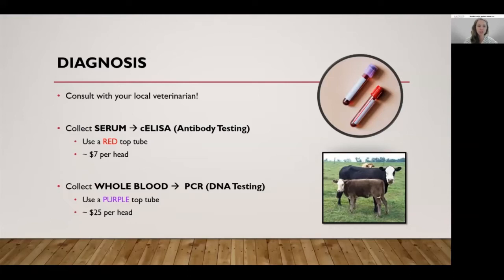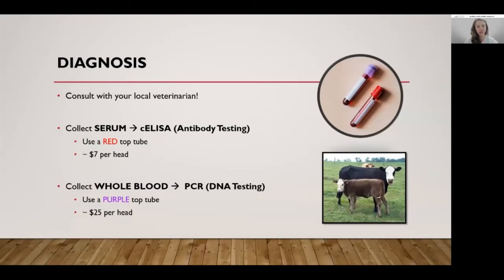The ELISA is the most cost-efficient test at roughly $7 per head. You can also collect a whole blood sample in a purple top tube, which contains anticoagulant to keep blood in suspension. Those samples are submitted for DNA testing via PCR. This is a more expensive test at $25 per head, but can be a more sensitive and specific test for ruling Anaplasma in or out. Your vet may recommend PCR to truly confirm an active infection, but most producers will go with the serum test initially.